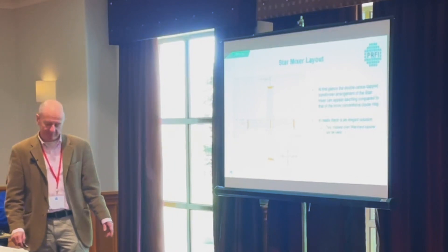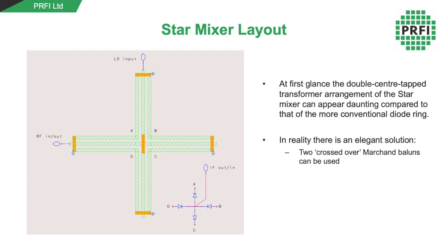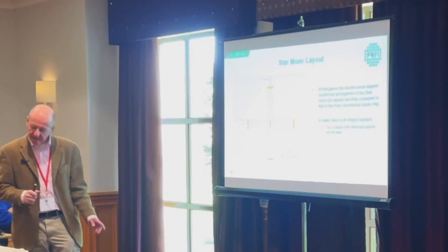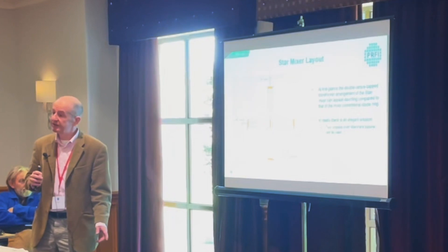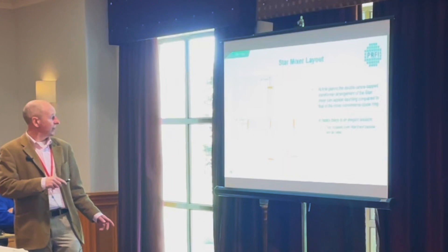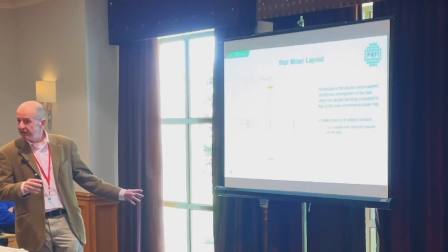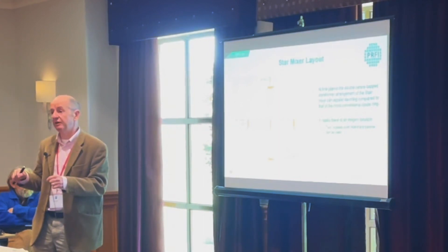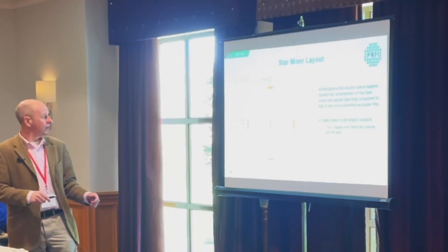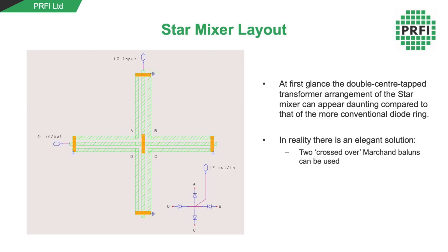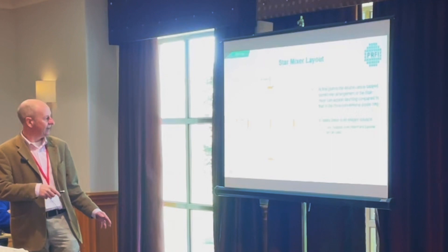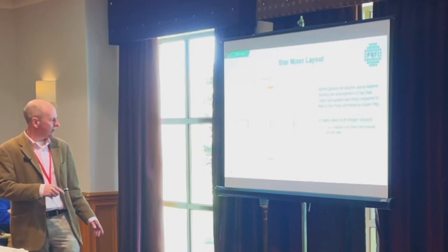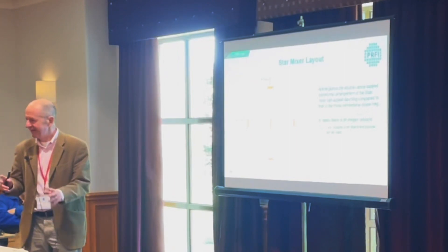We can also implement the star mixer. When you first look at it, the balun arrangement does look dreadfully complicated — until you realize you can implement these baluns quite nicely using coupled line Marchand baluns. Here we're using straight rather than spiral structures. As you go up in frequency you tend to move towards straight line structures rather than spirals, which are used at lower frequencies to save space. You've got four points A, B, C, and D, and you connect the diodes and extract the RF. The question is how to connect the four diodes to these points.